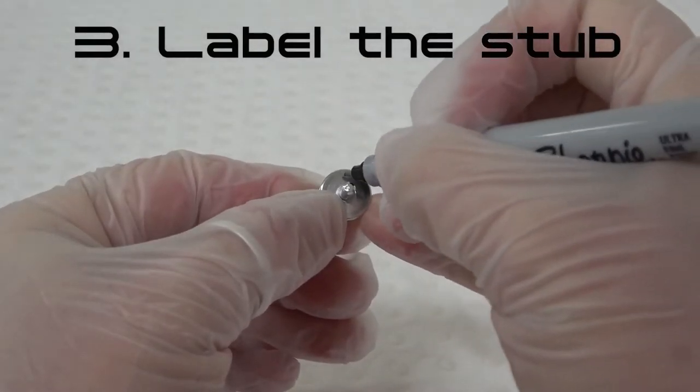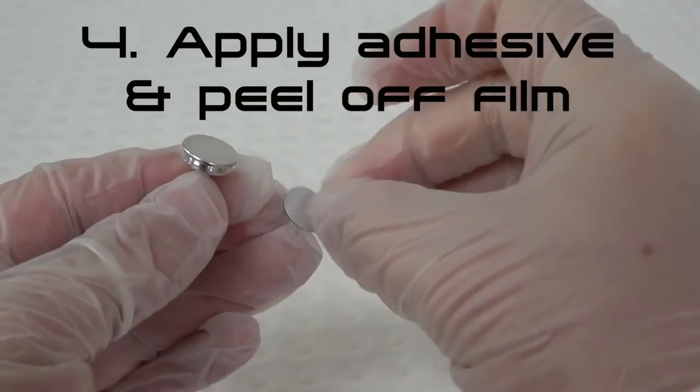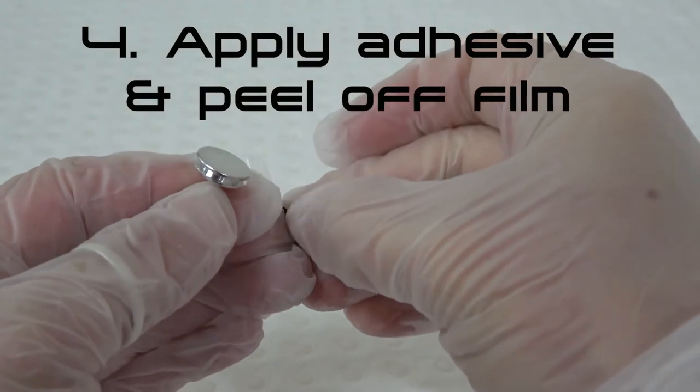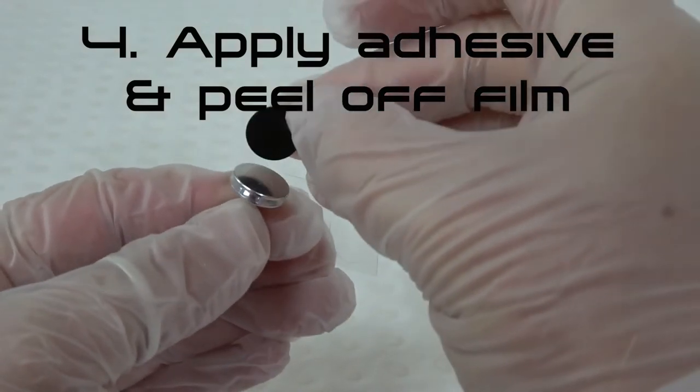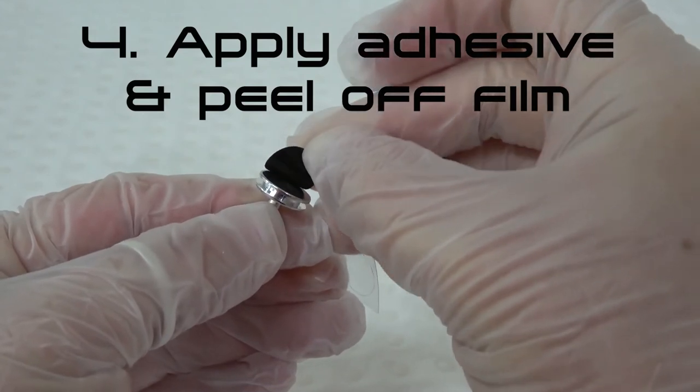Step 3: Label your SEM stub with the sample name or ID code. Step 4: Place one side of the double-sided adhesive onto the SEM stub. Remove the protective film to expose the surface of the double-sided adhesive.